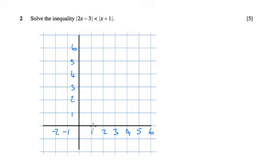The 2x minus 3 is going to have a gradient of 2, and if it was without the modulus it would cross the y-axis at minus 3. So that means it's going to cross the x-axis at 3 over 2, or 1 and a half. With a gradient of 2, it's going to look like this.